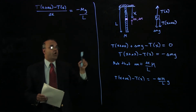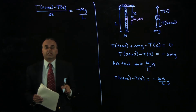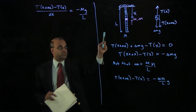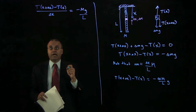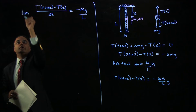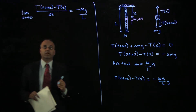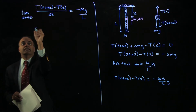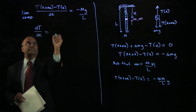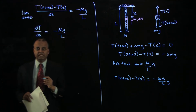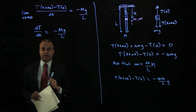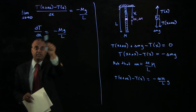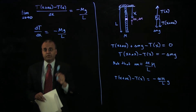Now I'd like to examine what happens if I take the limit as delta x approaches 0 — in other words, the limit of an infinitesimally small mass element. The left-hand side is just the definition of the derivative of T as a function of position. So I can write dT/dx equals minus mg/L. This is a differential equation — an equation that involves a derivative. This particular differential equation can be solved by separation of variables, where I put dt and dx on different sides of the equation and then integrate both sides to find the solution.